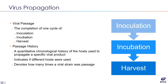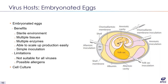In addition to authentication and quality control methods, the virus propagation history is also monitored, known as the passage history. It is a quantitative, chronological history of the hosts used to propagate a specific viral product. Passage histories are useful for keeping track of host changes and the number of viral passages that have occurred since the isolation of the original virus.